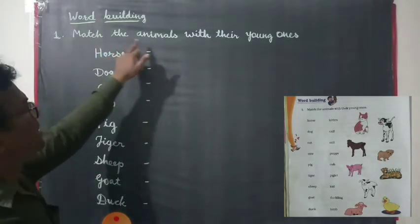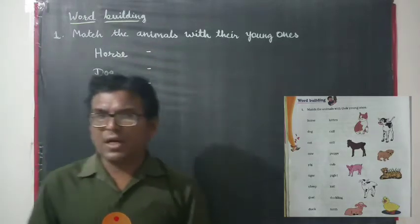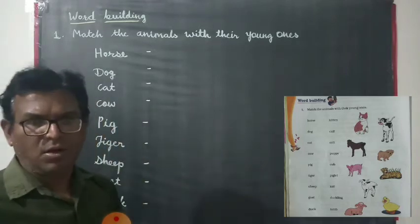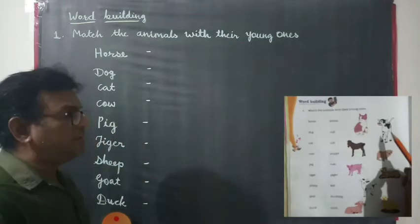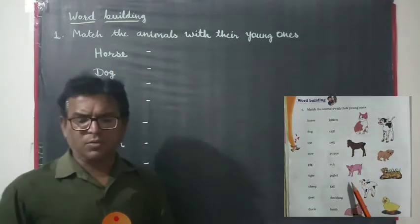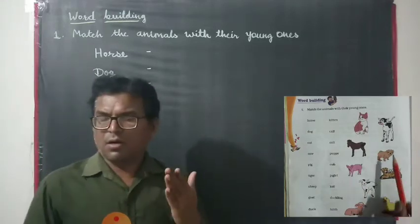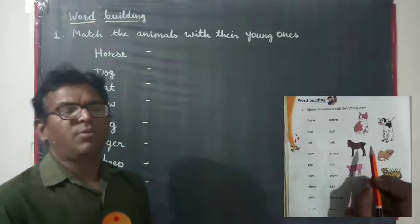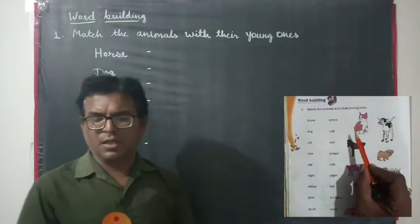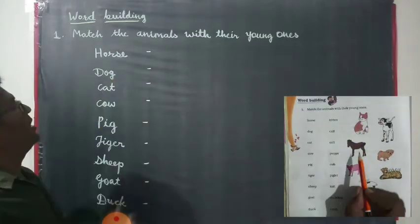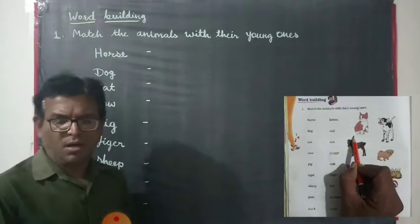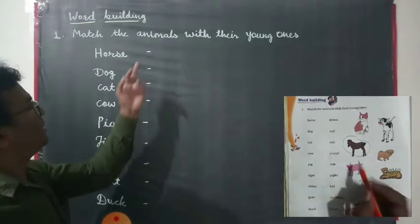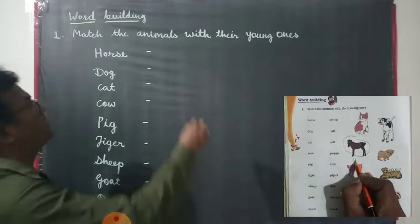First, match the animal with their young words. We find out the young words of animals from the pictures given in your textbook. Like first is horse — what is called the young word of horse? Yes, this is the young word of horse, that is called a colt.